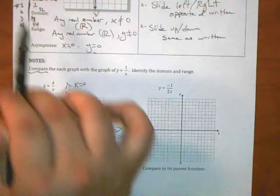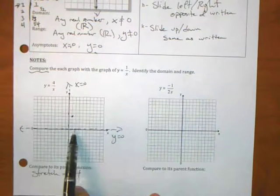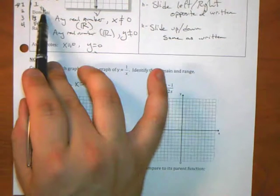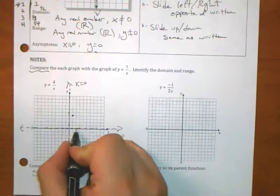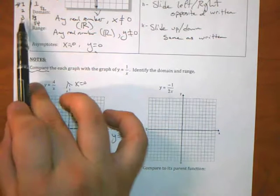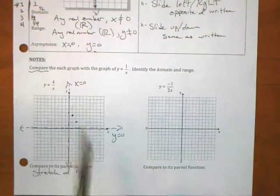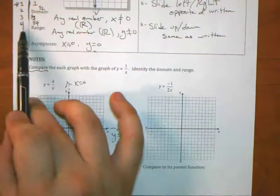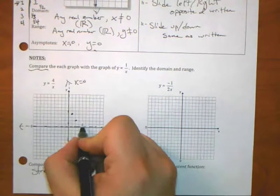Because ours is stretched by 4. So, in the parent, when x is 2, y is a half. So, in ours, when x is 2, y should be this times 4. So, what's a half times 4? 2. So, I go over 2, go up 2. I'm going to, we can do the 3, but I'm going to skip it and go directly to the 4 here. When x is 4, when the parent is 1 fourth, and ours, it should be 1 fourth times 4. And do we know what that is? 1.